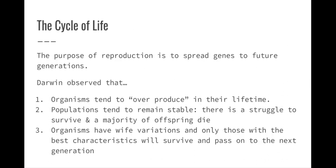Darwin said that the purpose of reproduction is so that we can spread our best genes to the next generation. He observed that in order to do this, organisms tend to overproduce in their lifetime — almost like a numbers game. The population will tend to remain stable, and there's a struggle to survive. A majority of the offspring are going to die, except for the ones able to combat whatever that struggle is.